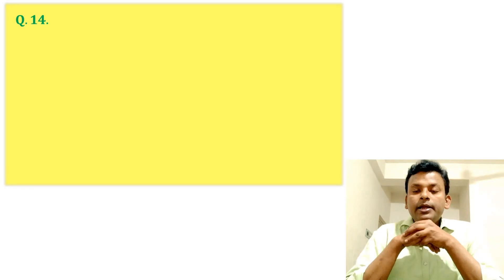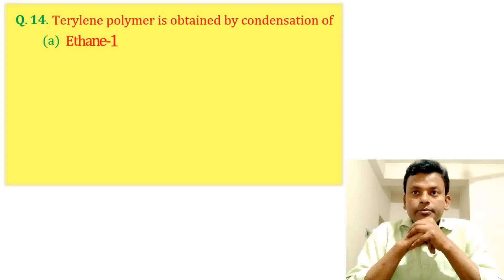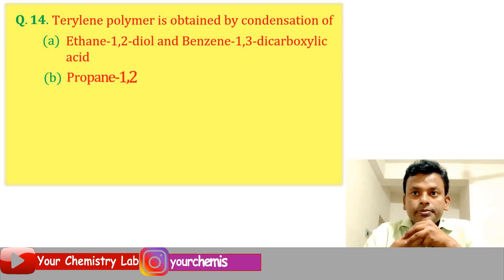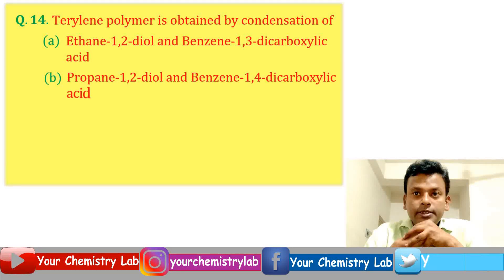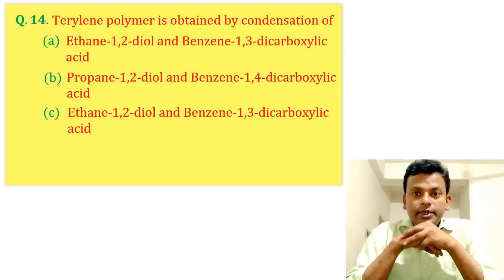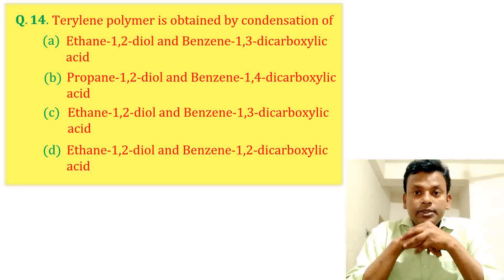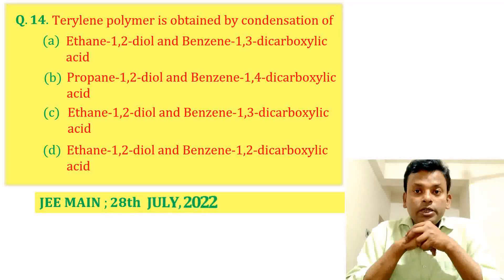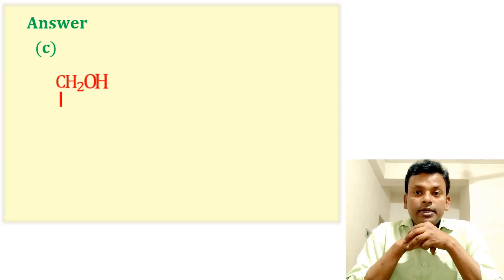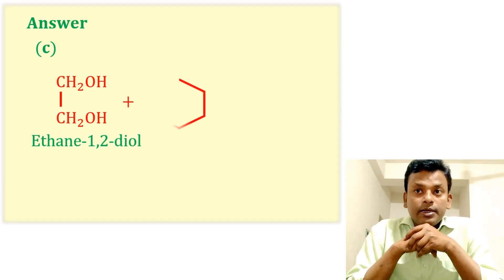Question 14: Terylene polymer is obtained by condensation of — This question was set in JEE Main 28th July 2022 morning shift. Answer: Option C is correct. Ethane-1,2-diol and benzene-1,4-dicarboxylic acid give the Terylene polymer. So Option C is correct.